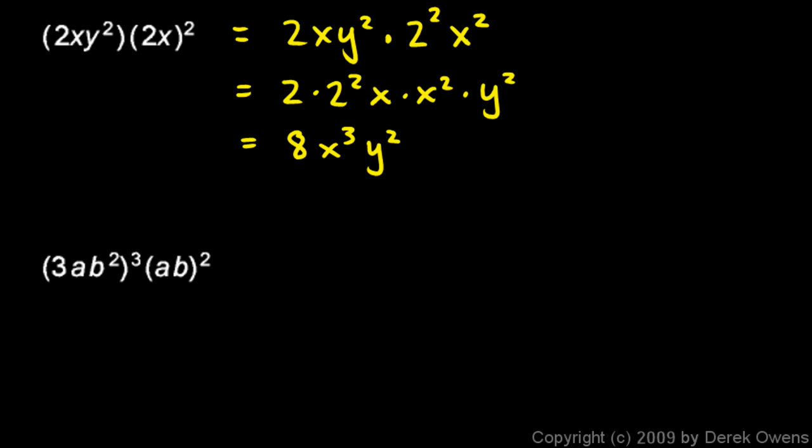3ab squared cubed, that thing cubed, times ab squared. So let's write this out. The first thing I'm going to do is take this and take each of those things and cube it. So I'm going to work out this 3ab squared to the power of 3.